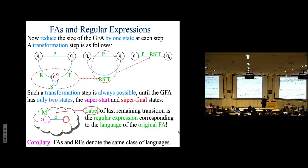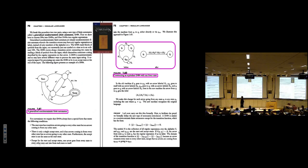Regular languages, finite automata, and regular expressions — all three characterizations denote the same class of objects: the class of regular languages. That's very useful to know. The proof is in the book on pages 170 to 172, generalized finite automata construction — read more about it there.